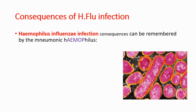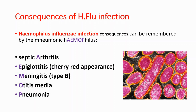We are using A for arthritis. Arthritis is pain and inflammation in a joint. We are using E for epiglottitis. After epiglottitis infection we can see a cherry red appearance, and epiglottitis is inflammation and swelling of the epiglottis.